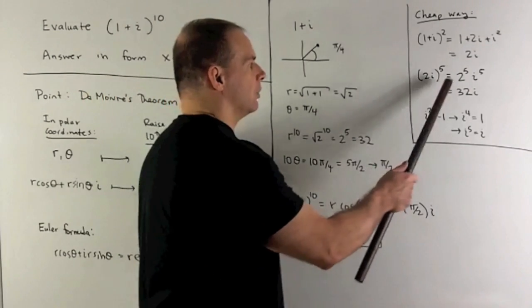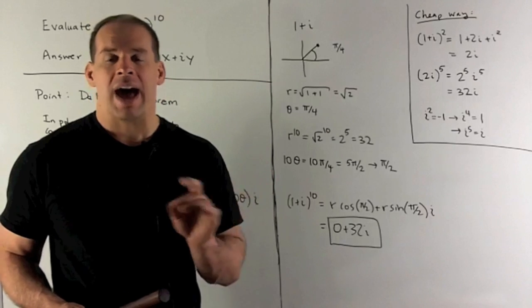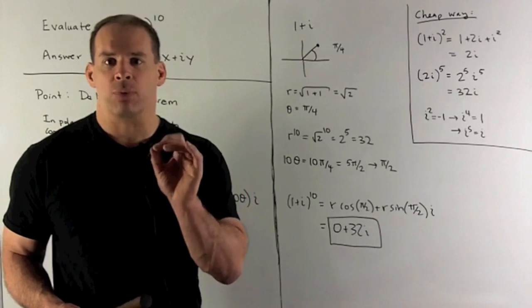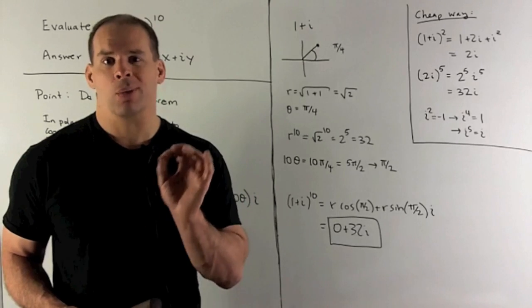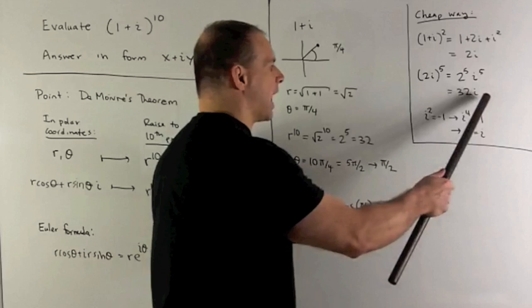So we're really looking at 2i raised to the 5th power. That's going to give me 2 to the 5th times i to the 5th. So that's our 32. i to the 5th, note, i squared is minus 1, so i to the 4th is 1. So i to the 5th is just 1 times i. So we're going to get 32 times i.